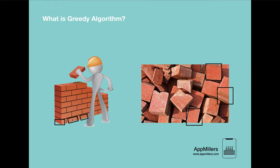This way we can finally achieve building our wall using these broken bricks. Similarly, if we apply a greedy algorithm to this problem, it will do the same thing — selecting the best brick at that time, using it in the wall, then selecting the next best, and continuing until the wall is finished.